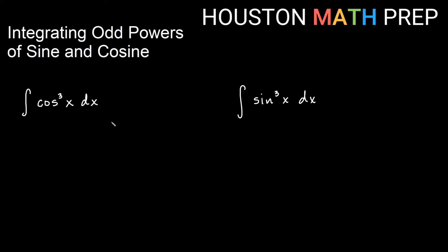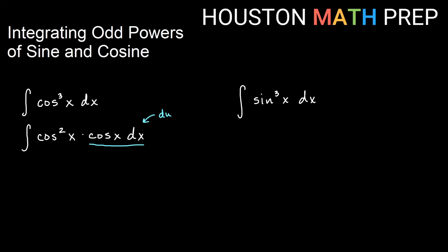We'll start with the integral of cosine cubed x dx as our first one. This is an odd power, so I save one copy of cosine — one piece of that odd power — to be part of du. So we want to break off one copy of cosine x. Think about what you're choosing for du first. If du is cosine x dx, then u would be sine of x. If u is sine x, then du is cosine x dx. The remaining stuff needs to be in terms of sine x, and we'll do that using the Pythagorean identity.